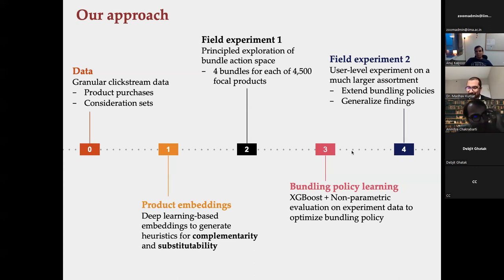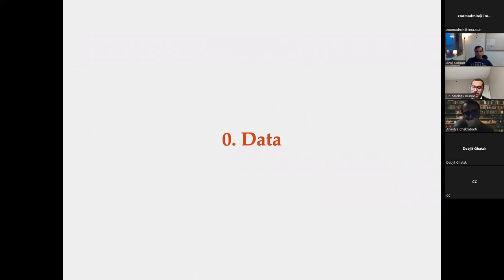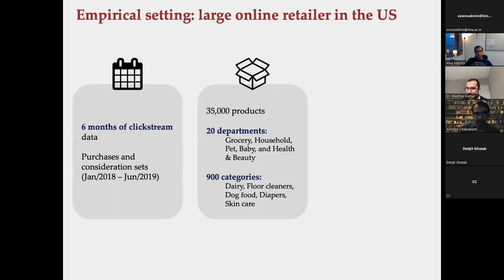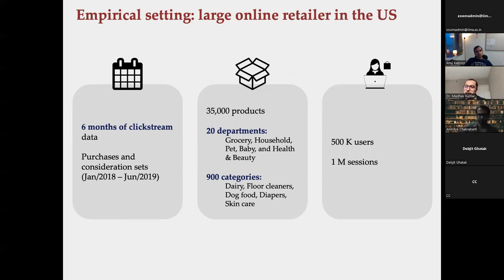One participant noted this work suggests a theory for endogenous product market segmentation. Madhav confirmed they do have some theory on product segmentation. On the data: they have six months of granular clickstream data from a U.S. online retailer — a competitor to Amazon — with about 35,000 products covering grocery, household, health, pet, and baby categories, about 500,000 users, and about a million shopping sessions.